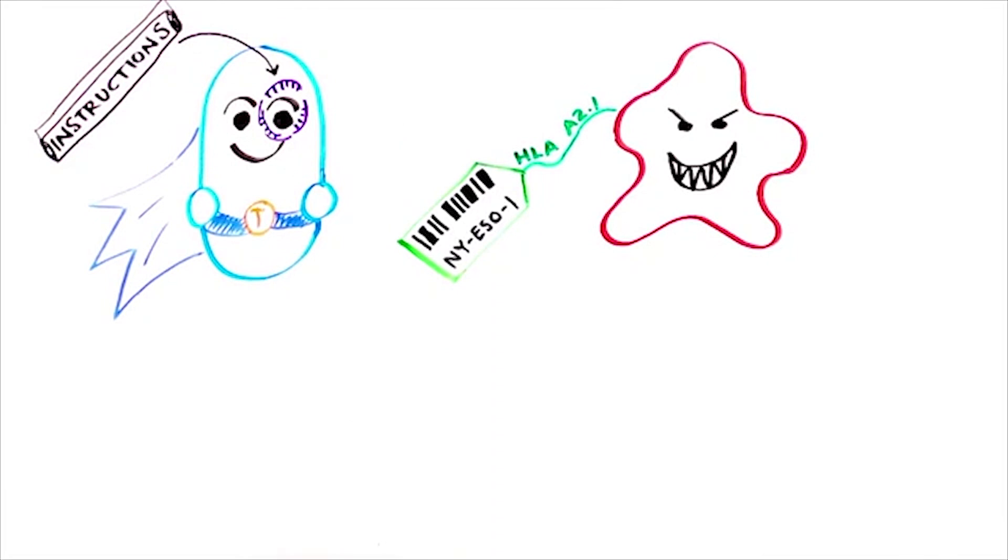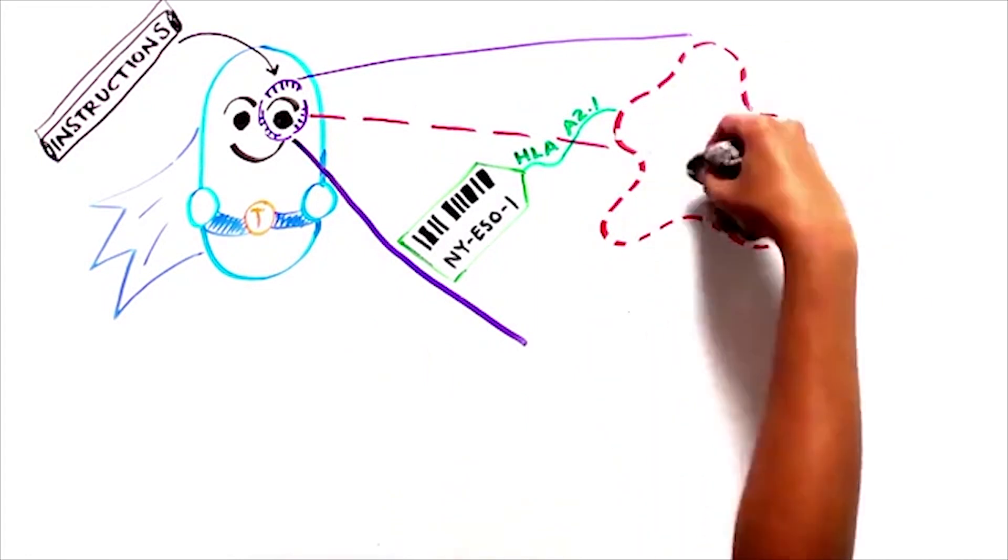These instructions are programmed into a sensor on the surface of the immune cell. When the immune cell and cancer cell encounter one another, the immune helper molecule HLA-A2.1 enables the sensor on the immune cell to recognize the NYESO1 tag, which allows the immune cell to eliminate the cancer cell.